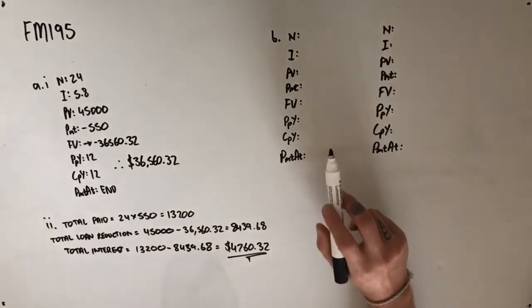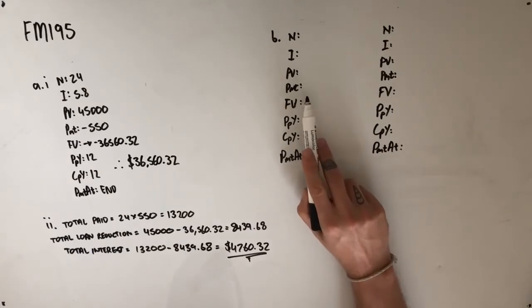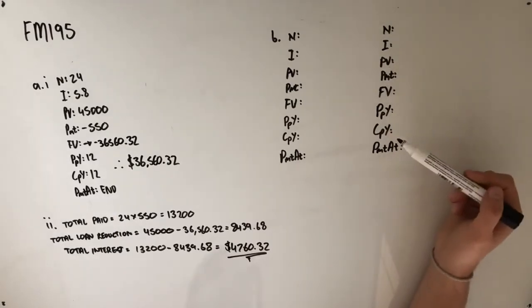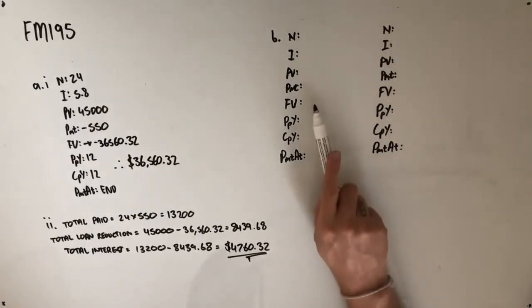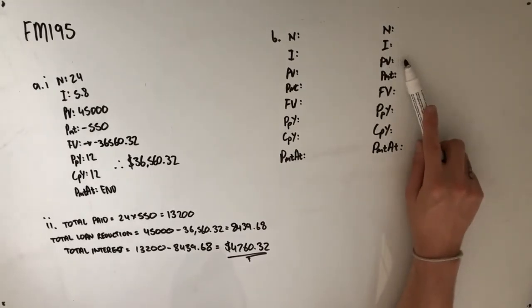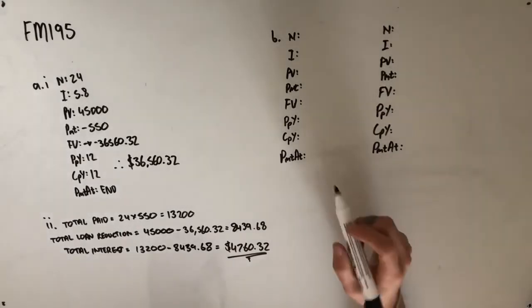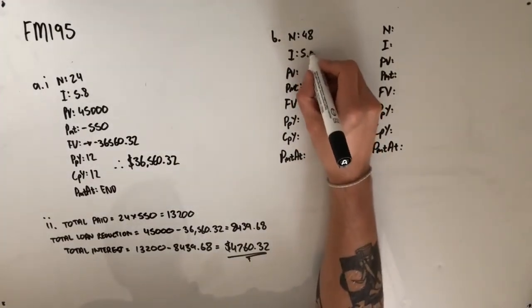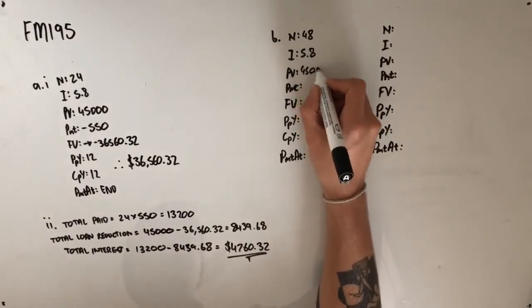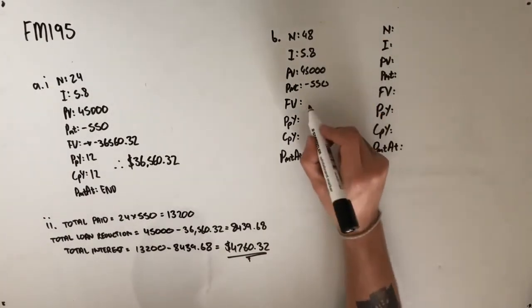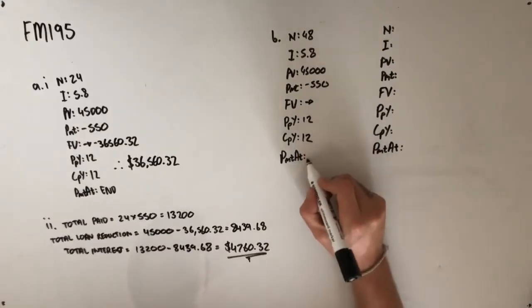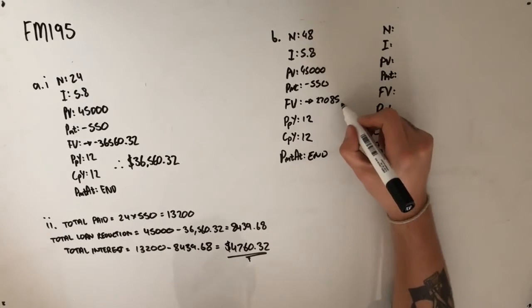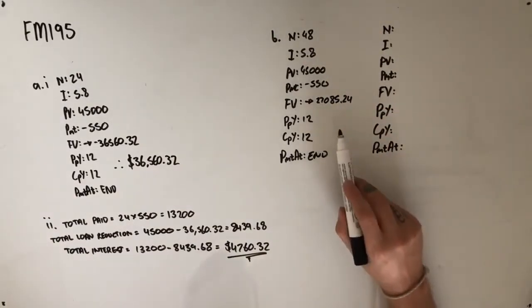So we're going to have to solve this question in two parts. What we need to figure out is how much Sam still owes on his loan after four years, and then we can find out the amount that it would have to be reduced to in order to be paid off after another two years. If we find the difference between what it's worth after four years and what it needs to be to have two years left to go, we can find what that lump sum payment has to be. So we'll start with the value of the loan after four years. 4 times 12 is 48. Our interest rate is still 5.8%. We're still starting from the $45,000 that was borrowed, making payments of $550 per month, and we're solving for this future value at 12 and 12. Plugging that into Finance Solver, you should get a rounded answer of $27,085.24.